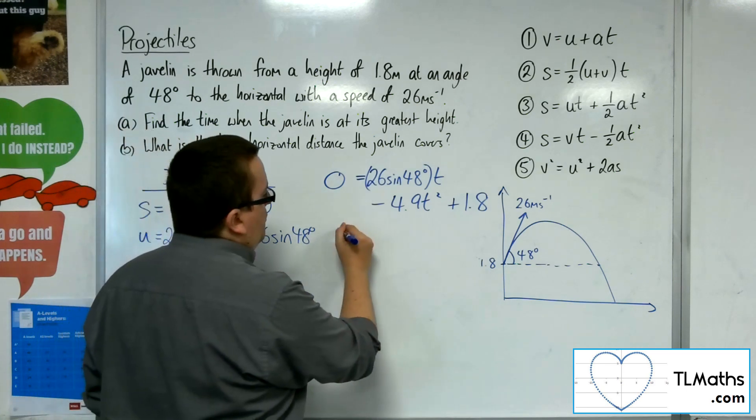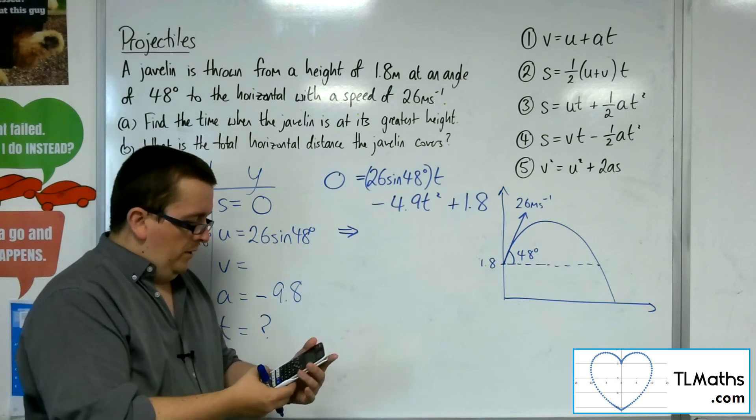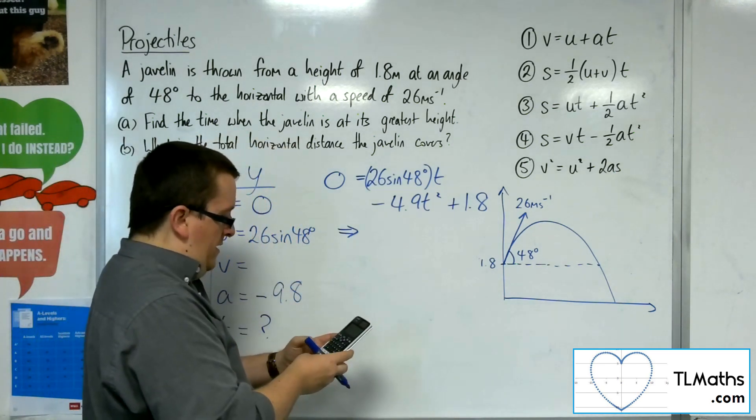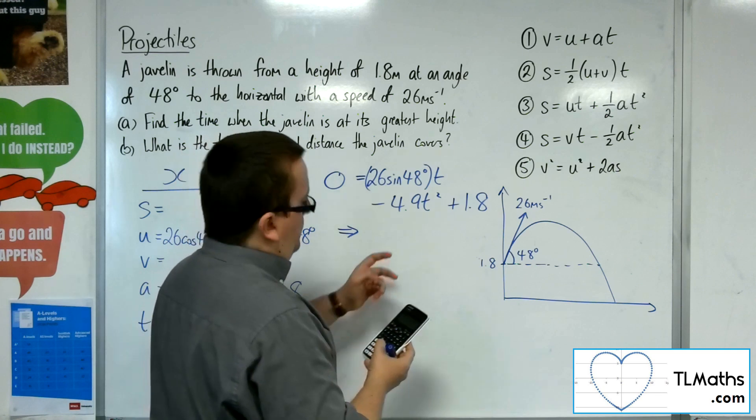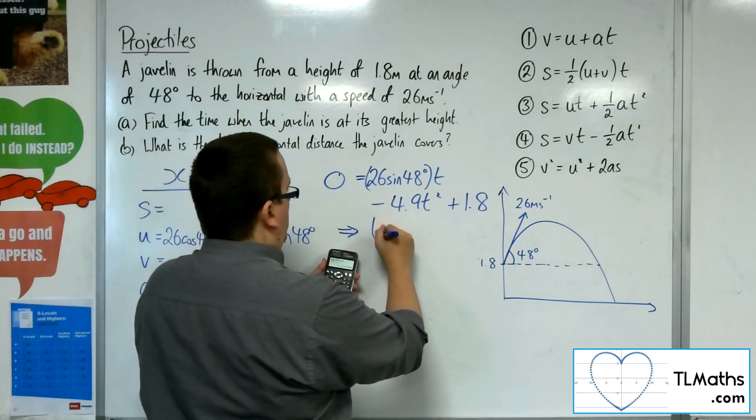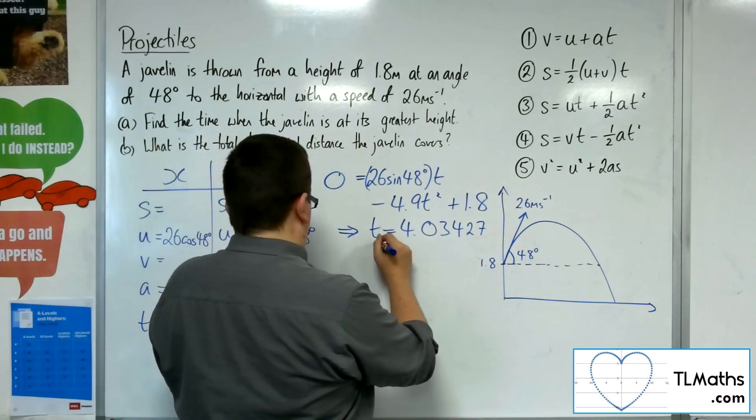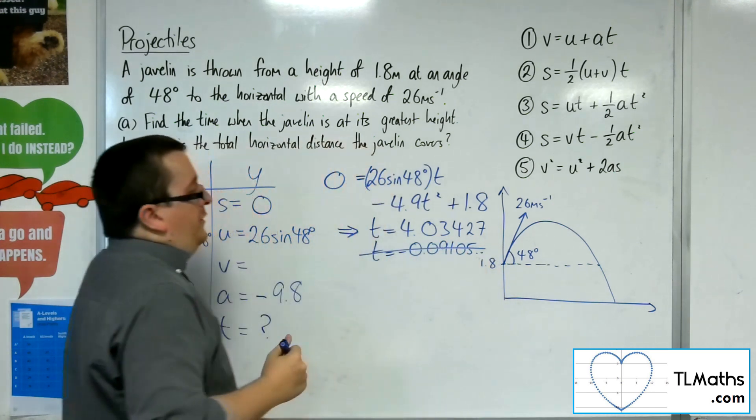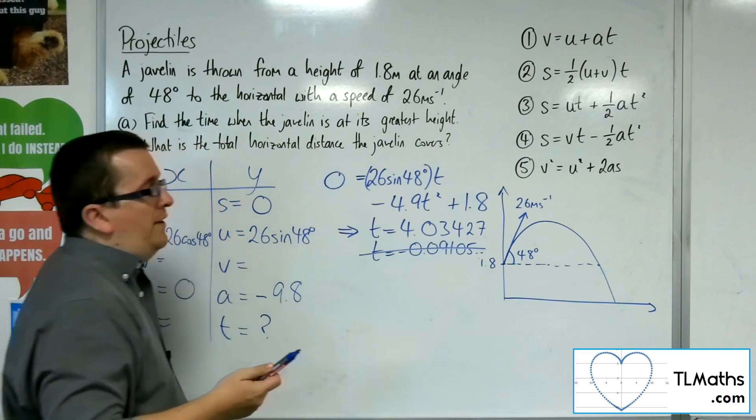So, what I can do from there is I can then type this equation into my calculator to get the solutions. So, going to the quadratic solver, the coefficient of the X squared is minus 4.9. Then we've got 26 times sine of 48, which is 19.321. Then we've got this 1.8 on the end. And we get values of 4.03, and T is minus 0.09105. But clearly, that one doesn't make any sense. We can't have negative time. So, the time in question is 4.03427 seconds.